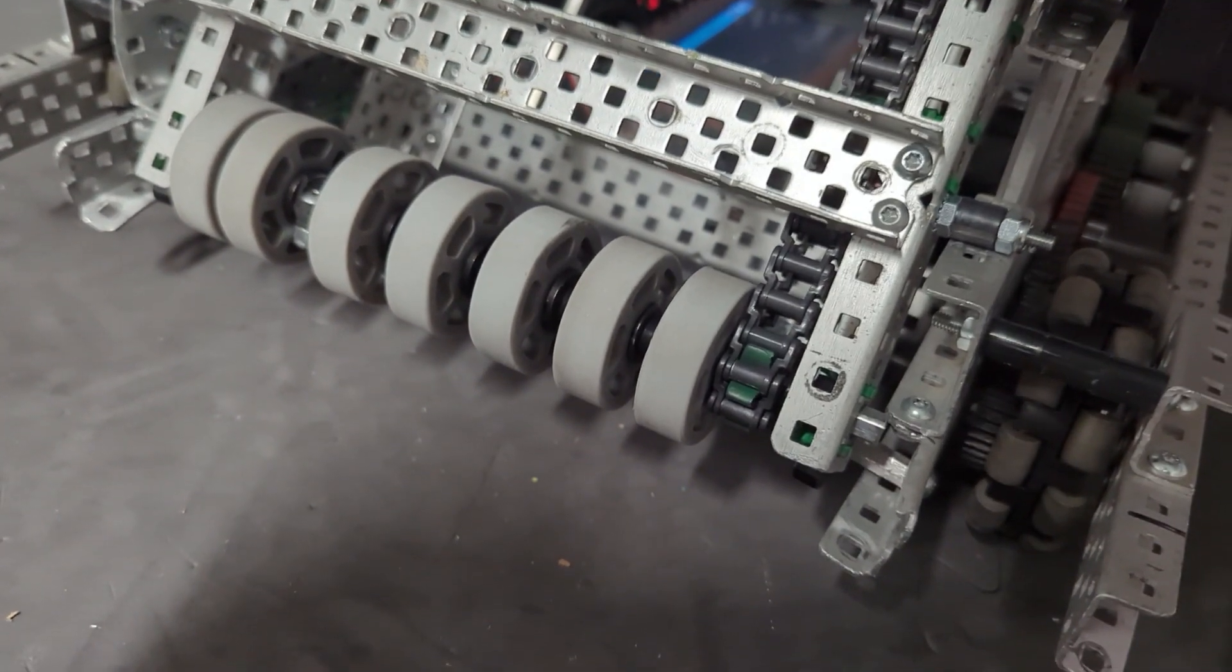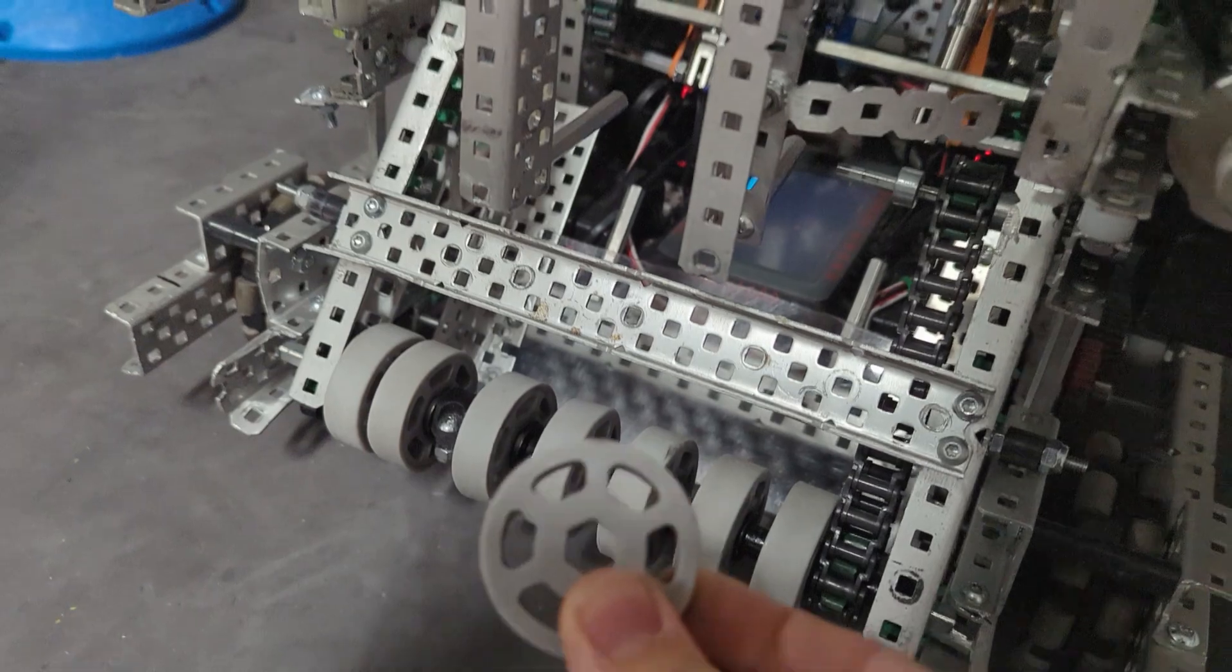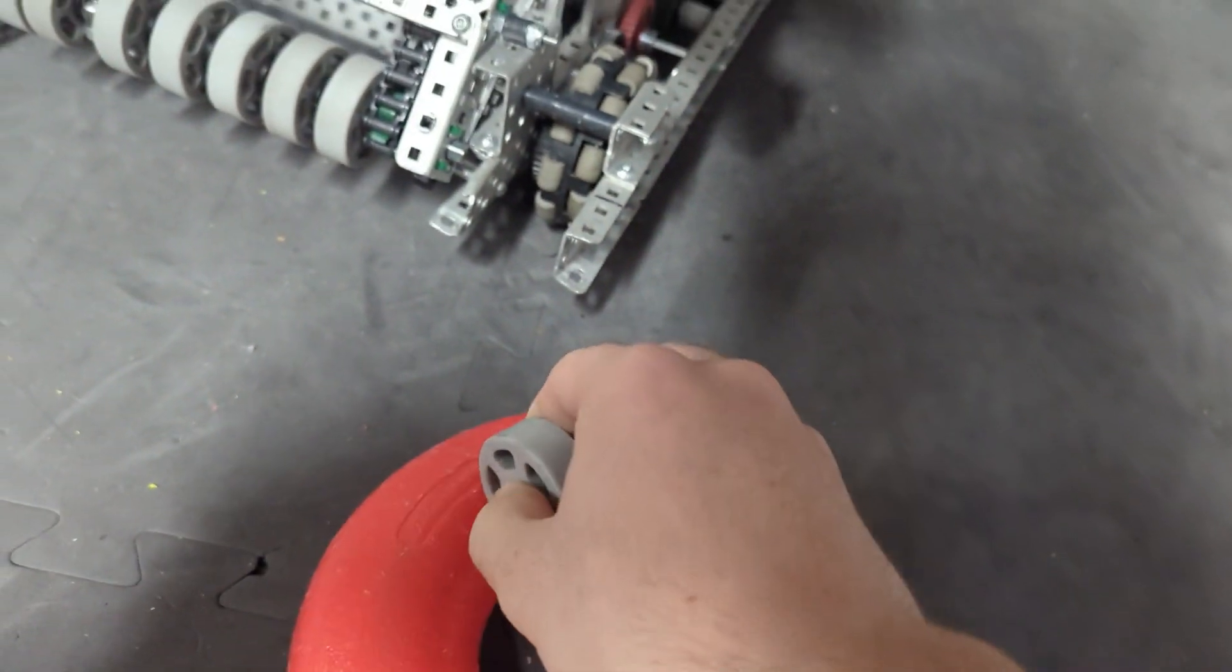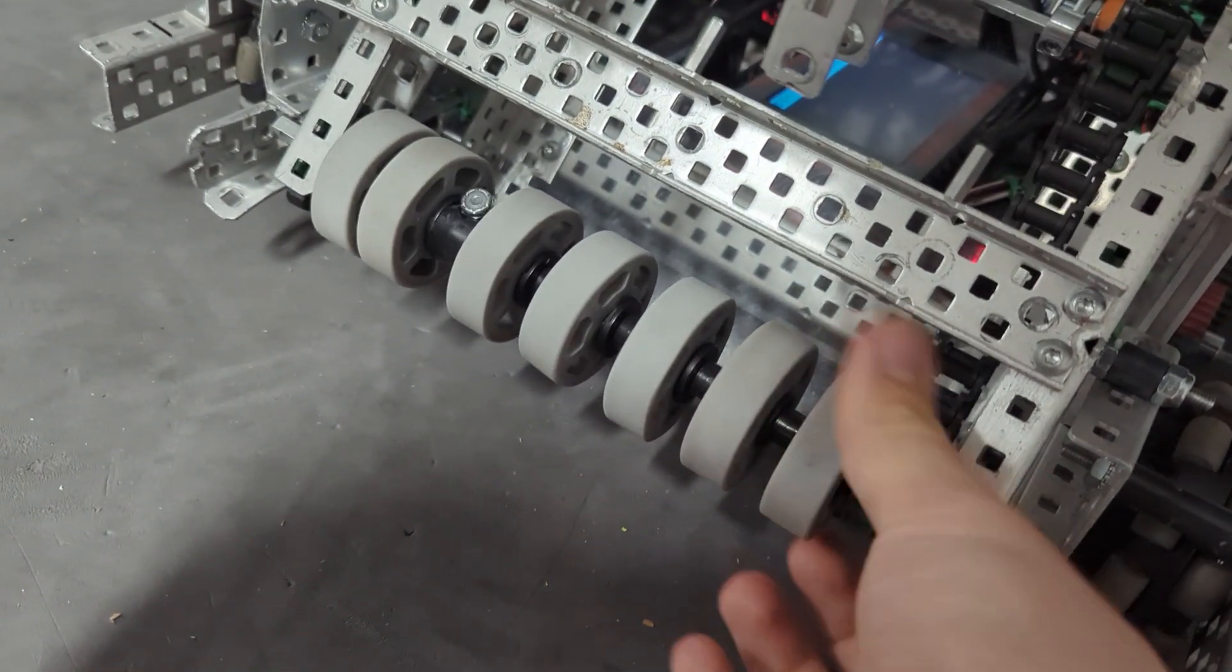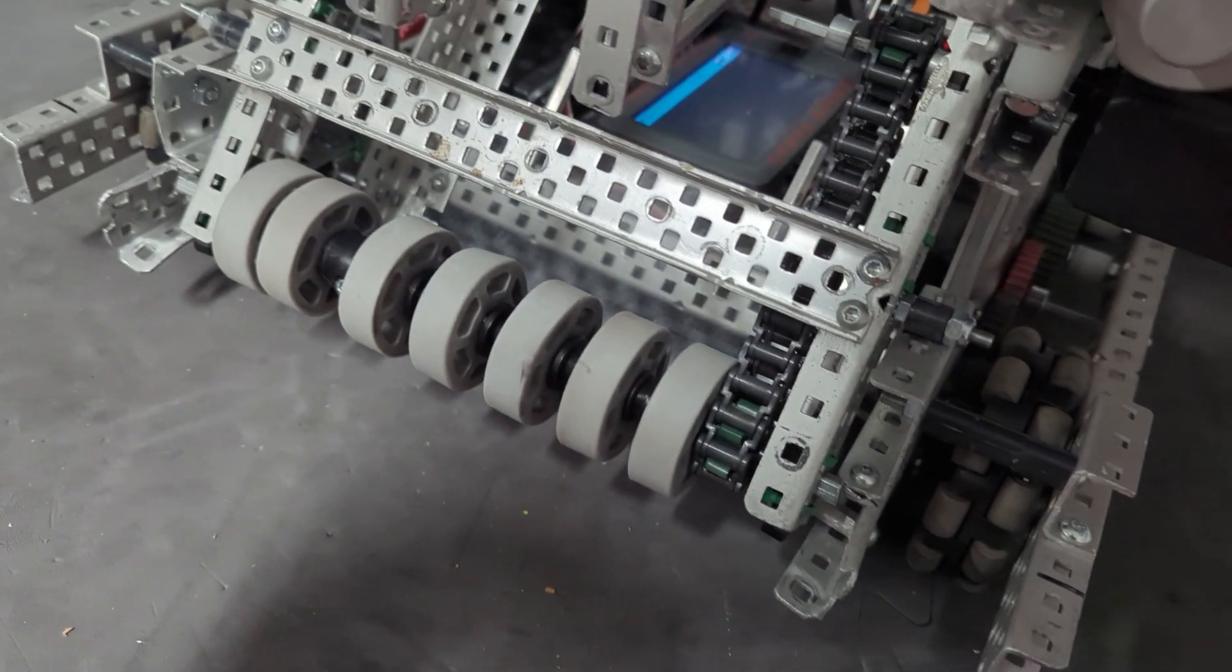Now the first thing you're going to want to know when you're building an intake is to use these things called flex wheels. And these flex wheels are really good because they are really grippy on the ring and they also are spinning rollers. And a spinning roller is always better than a claw because of this thing called touch it, own it.